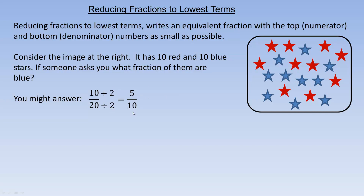Now 5 and 10, that's not reduced to lowest terms yet, because 5 divides into both 5 and 10. Any number that ends in 5 or 0 is divisible by 5. So 5 divided by 5 is 1, and 10 divided by 5 is 2, so 1/2 is the lowest terms. The reason 1/2 is lowest terms is because there's nothing, whole-number wise, that divides evenly into both 1 and 2.